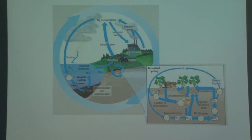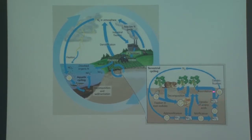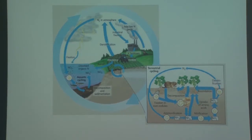So ammonification: NH4+ goes through nitrification to NO2- then to NO3-, and this gets absorbed into the plants. If you want to convert nitrate back into N2, there's another bacteria for that called denitrifying bacteria.